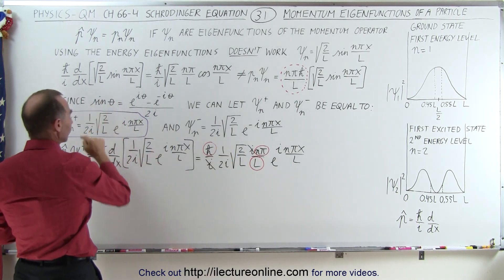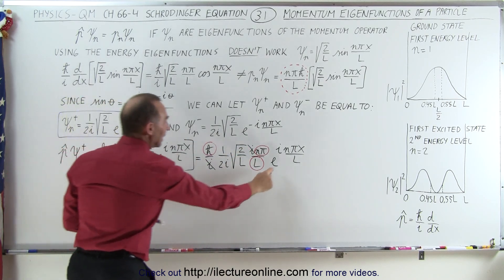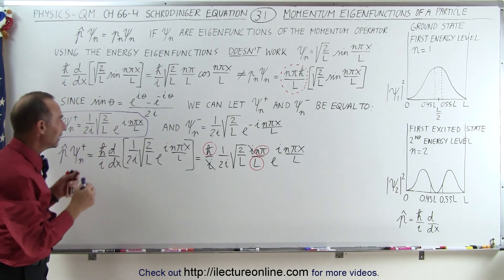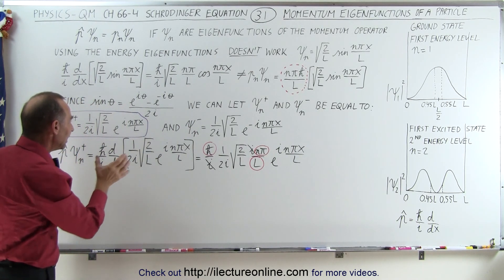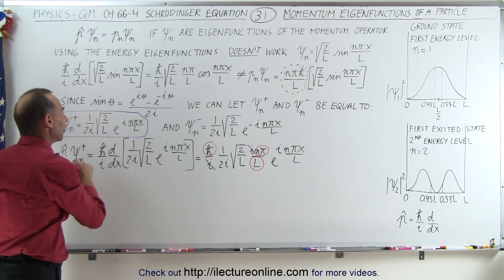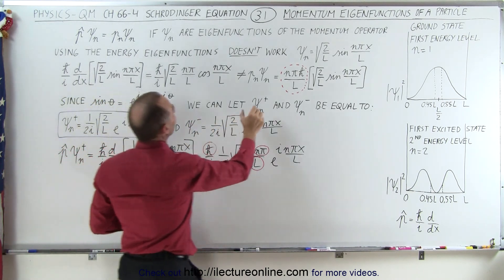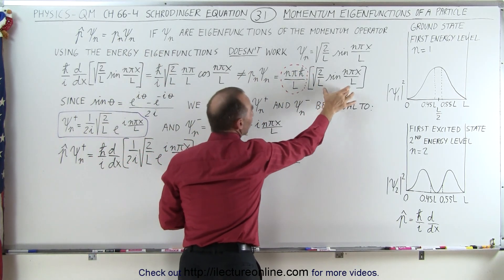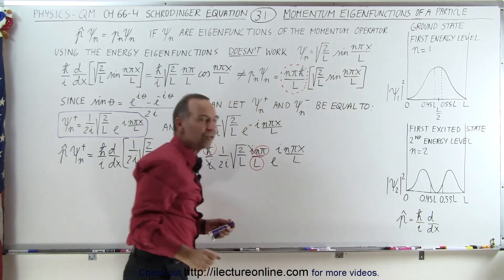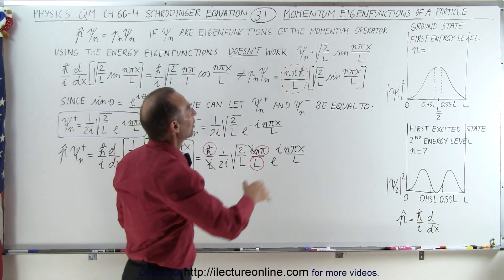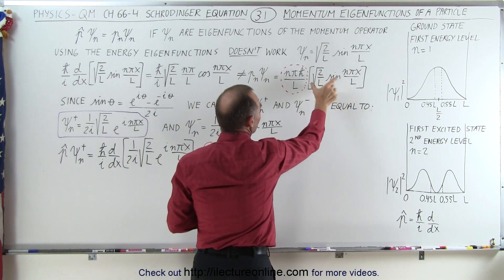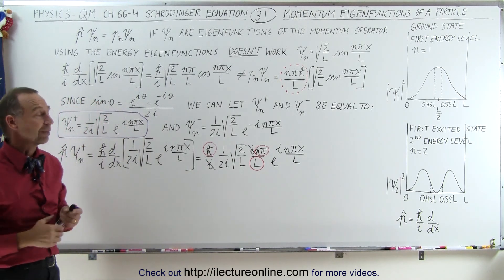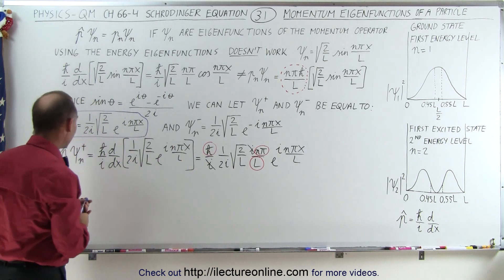Looking back, that was exactly the assumption we made — this was going to be our eigenfunction. Notice what's left: the 1 over 2i, the square root of 2 over L, and e to the i n pi x over L. So we realize that if we put the expression in exponential format with the right constants in front, when we take the derivative we end up with the momentum eigenvalue times the momentum eigenfunction. Sure enough, we got the right value. We can do the same thing for the negative value.